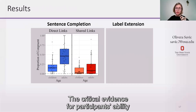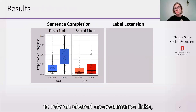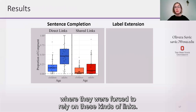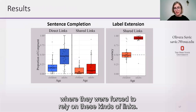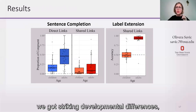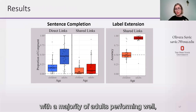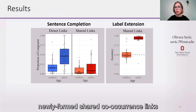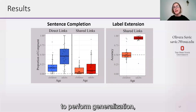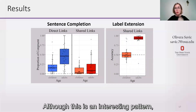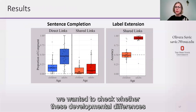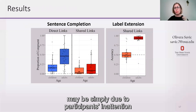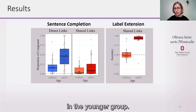The critical evidence for participants' ability to rely on shared co-occurrence links comes from the label extension task, where they were forced to rely on these kinds of links. In this task, we found striking developmental differences, with the majority of adults performing well and being able to rely on newly formed shared co-occurrence links to perform generalization, while the majority of children failed. Although this is an interesting pattern, we wanted to check whether these developmental differences may simply be due to inattention in the younger group.